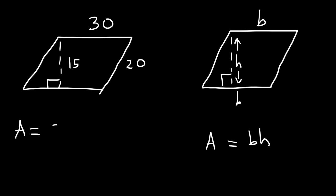In this example, the base is 30 and the height is 15. So it's just 30 times 15. 30 times 15 is 450, and so that's the area for this example.